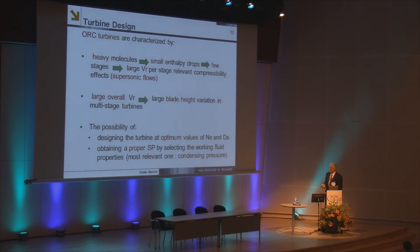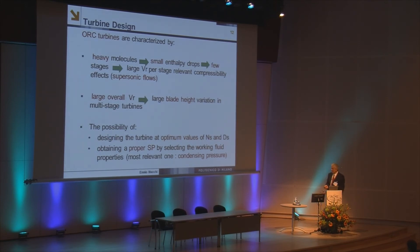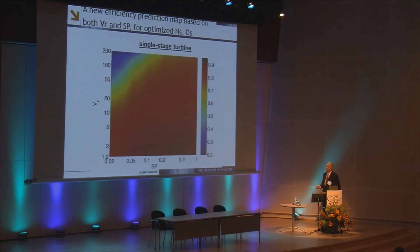It is quite easy to design the turbine at optimum values of specific speed and specific diameter, but to obtain the proper size parameter, you have to select the right fluid with the correct condensing pressure. This is the correlation we propose, with a correlation for single-stage turbines. The two parameters are the size parameter and the volume ratio.